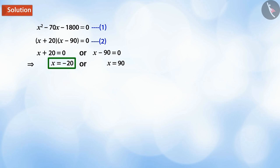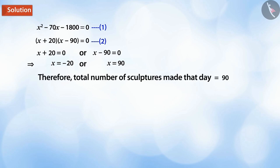Therefore, x = -20 and x = 90 are the solutions to the given quadratic equation. Since the number of sculptures cannot be negative, there were 90 sculptures made that day.